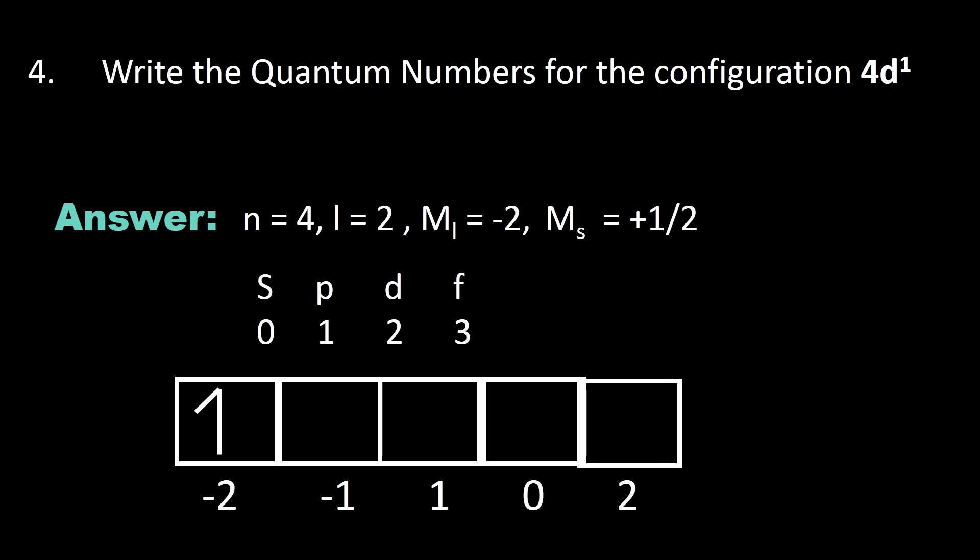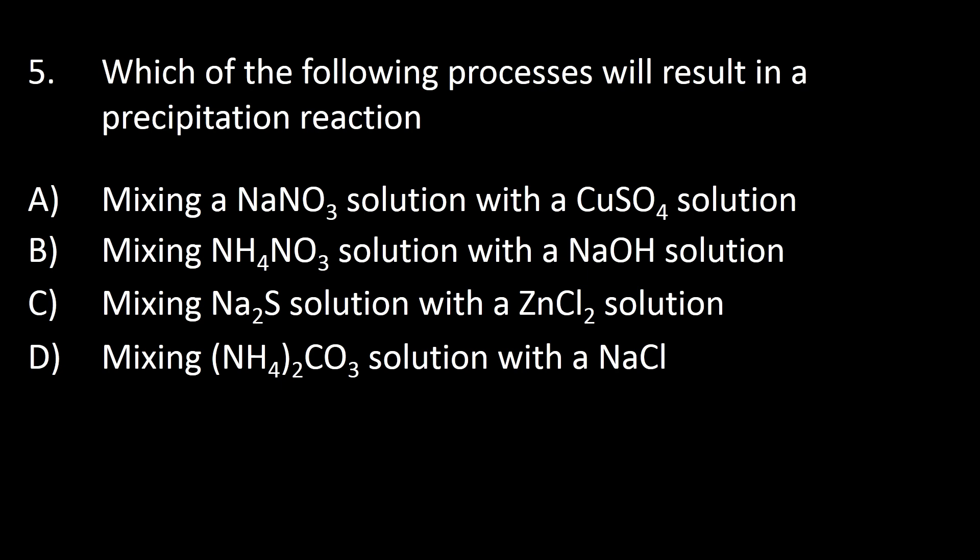Number five: each of the following processes will result in a precipitation reaction. Option A: mixing AgNO₃ solution with a copper sulfate solution. Option B: mixing NH₄NO₃ solution with a sodium hydroxide solution. Option C: mixing a sodium sulfate solution with a zinc chloride solution.